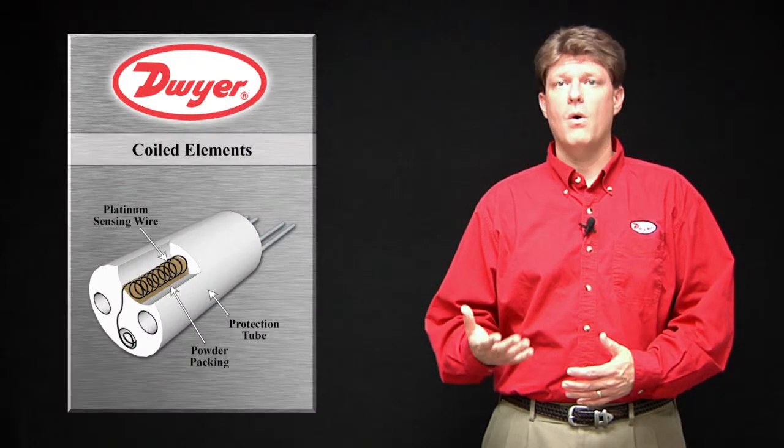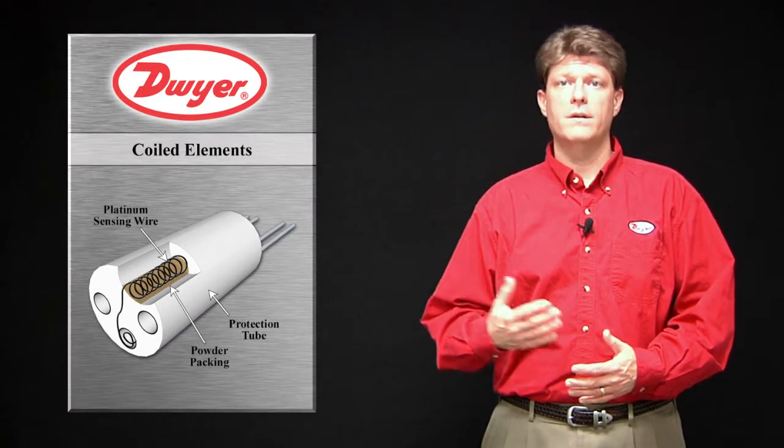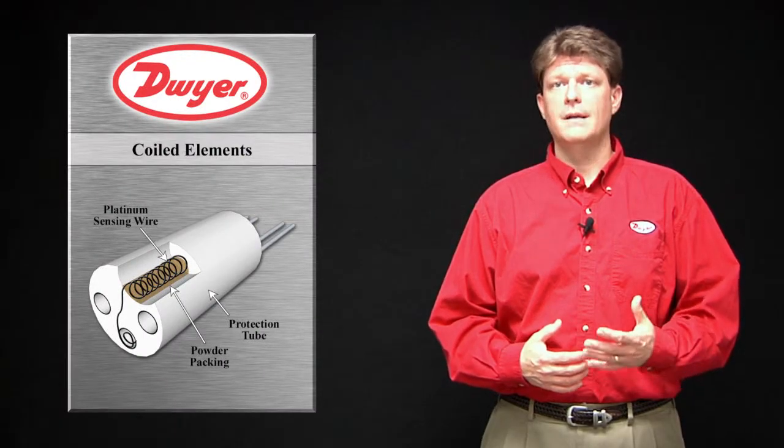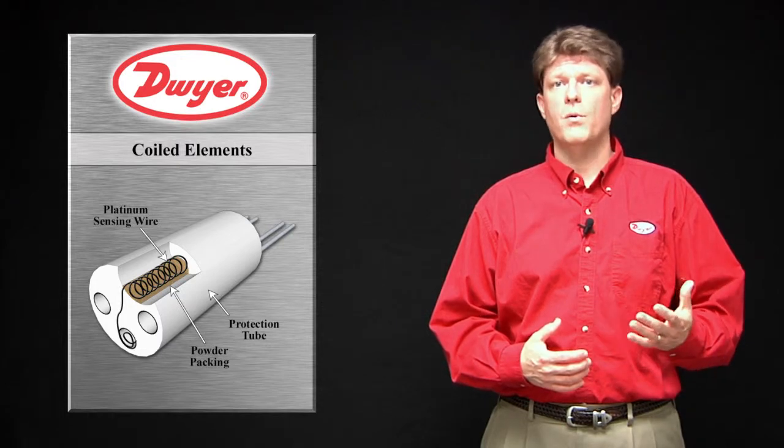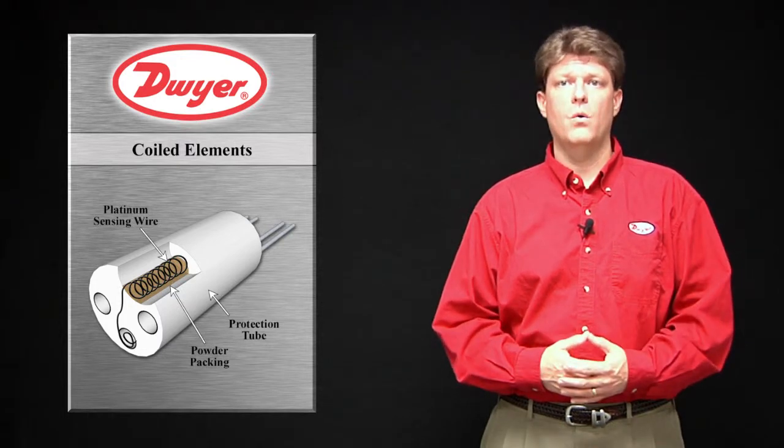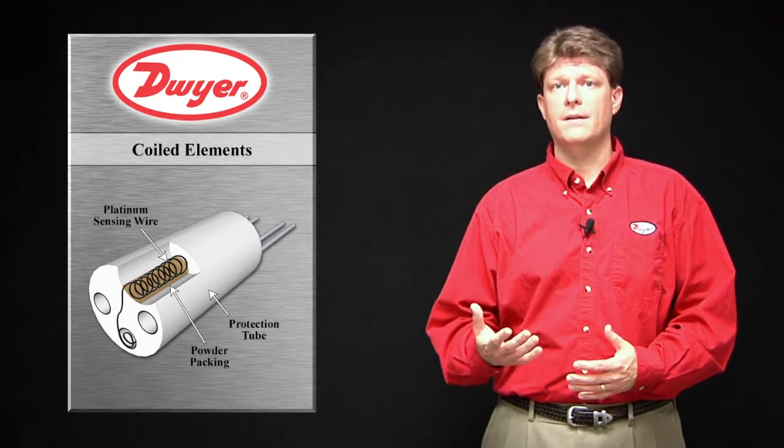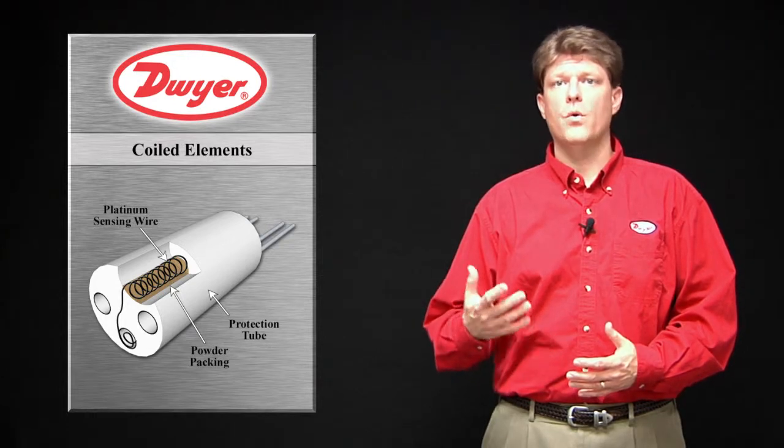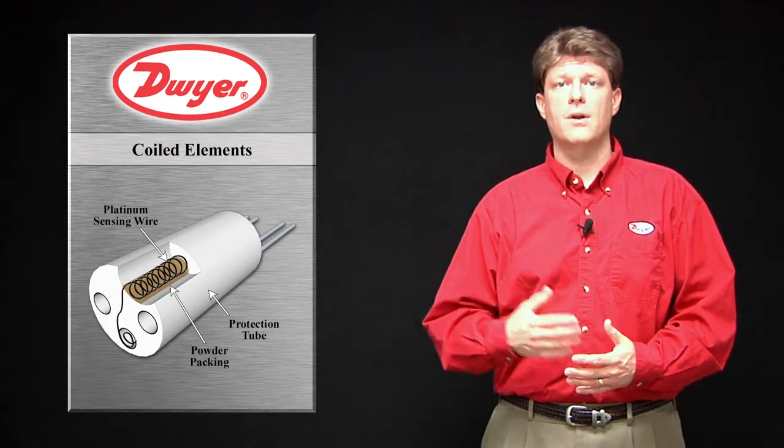In coiled elements, the wire coil can expand freely over temperature. The mandrel is made of an insulator that has holes bored through it for the wire sensing coils. The coils are packed with ceramic powder to hold the coils in place, but allowing freedom to expand and contract.